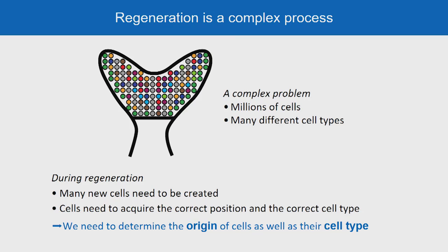That's actually a complex problem because there are millions of cells involved and many different cell types. During regeneration, many new cells need to be created, and those cells need to acquire the correct position and the correct cell types. So we need to determine the origin of cells as well as their cell types and their identity.